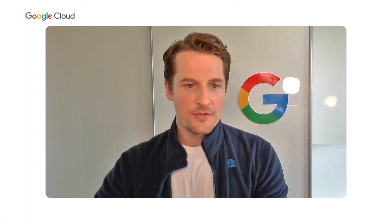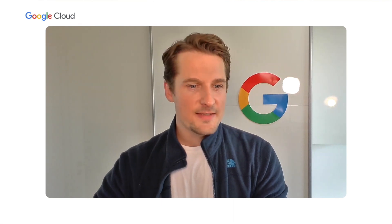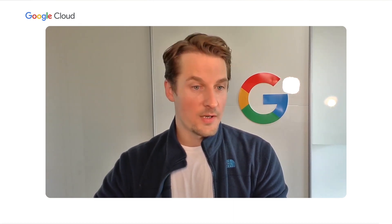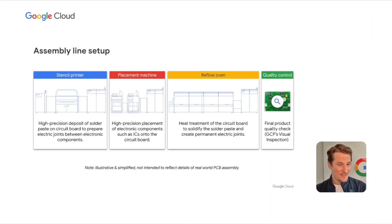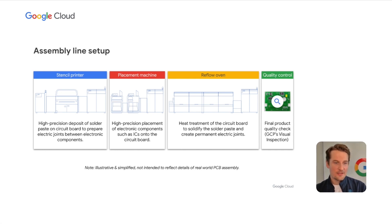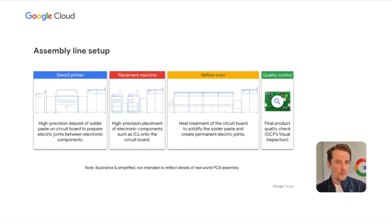Motion PCB starts the Smart Factory implementation with one of their main assembly lines, which has three machines. One, the stencil printer starts with an empty circuit board and deposits solder paste with high precision to prepare electric joints for when the electric components are added later. Two, the placement machine then adds those components, such as ICs, commonly referred to as chips, placing them directly onto the solder points. Three, the reflow oven exposes the circuit board to a controlled profile of heat, which solidifies the solder paste and creates a permanent electric joint.